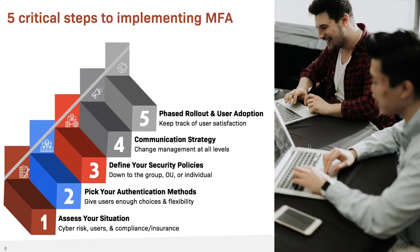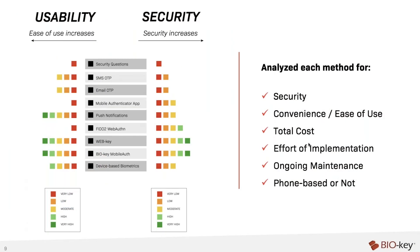The ebook we just released takes each authentication method and ranks it based on several criteria: security, convenience or ease of use, total cost of ownership, effort to implement, ongoing maintenance, and whether it is phone-based or not. There are plenty of cases where you'll run into situations where you can't use phones — whether it's cost prohibitive, people won't use them, or the work environment makes phone-based methods unsafe.